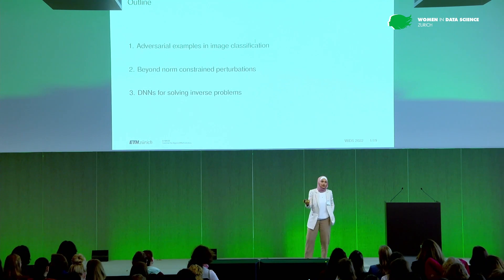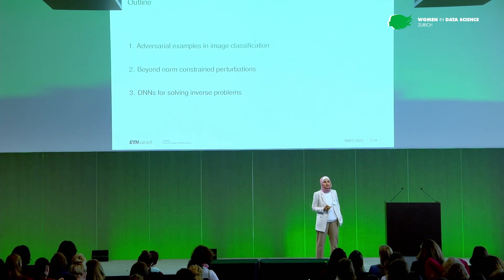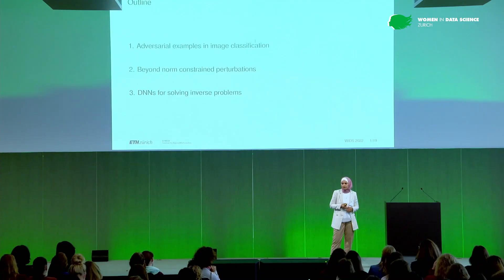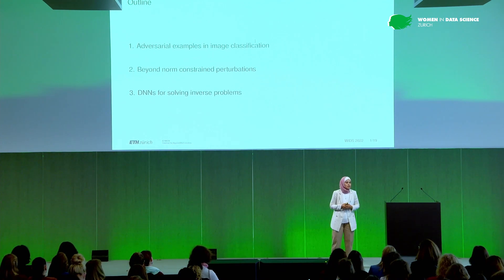Maybe you've heard of this in the literature about adversarial examples, adversarial attacks for deep learning algorithms. I'll talk a little bit about this in image classification, and I'll show you something that we have done in this context. I would also like to touch on a problem that is not image classification, but actually solving inverse problems — a regression problem using deep neural networks — and whether we can speak about robustness in that context.